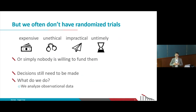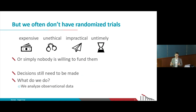Sometimes trials will be conducted eventually, but we don't have them yet and we have to make decisions now. And sometimes it may be as simple as not finding someone who will fund and conduct the trials. The problem is that even if we don't have randomized trials, we still need to make decisions. That's why we need to look at another source of human data: observational data.